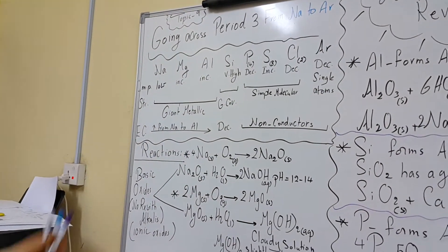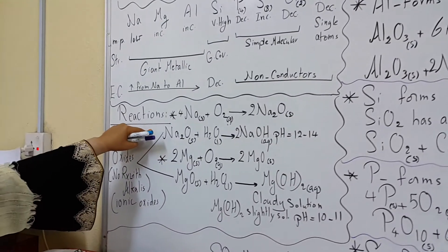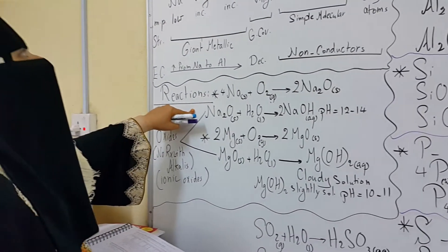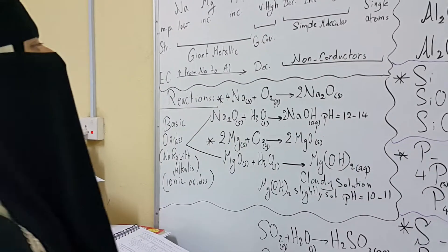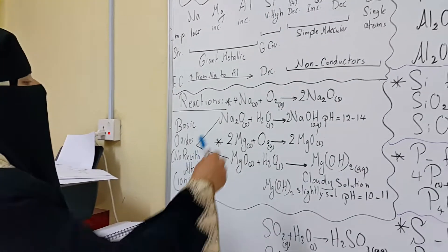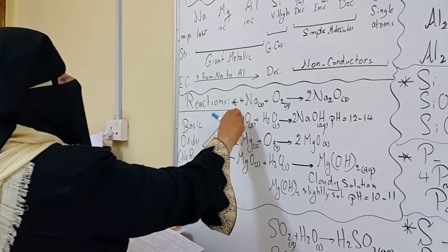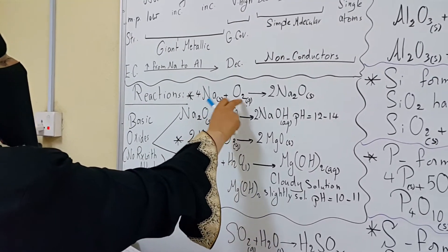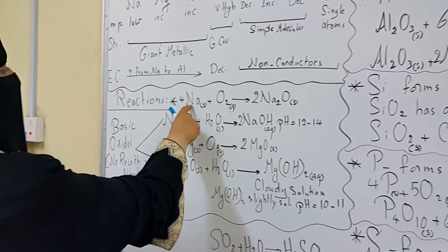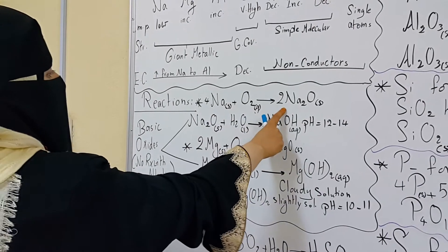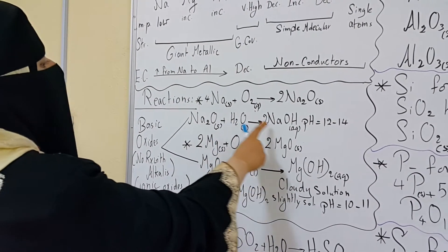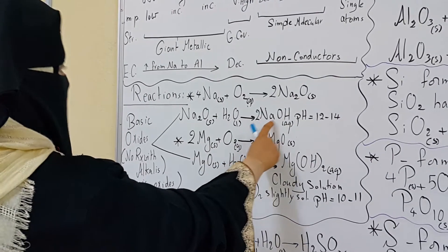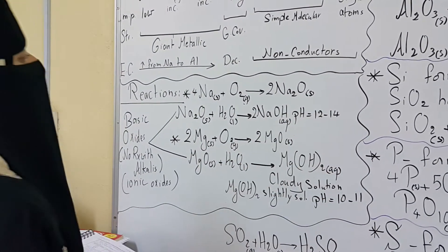Now let's go to chemical reactions of elements in period 3. This is a very important part and I hope that he brings some simple equations tomorrow in the exam, inshaAllah. Let's look at the reaction of sodium with oxygen to form sodium oxide. Sodium is a very reactive metal. It forms an oxide easily in air. This oxide dissolves easily in water forming an alkaline solution of pH value, very alkaline, 12 to 14.